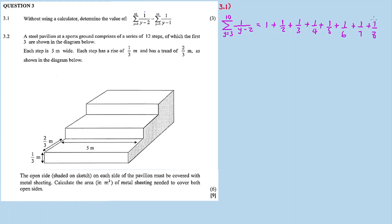We expand until the last term, which is 1 over 8. Now for the other sigma notation — 1 over (y minus 1). Substituting y equals 3: 3 minus 1 is 2, so it's 1 over 2. Then y equals 4: 4 minus 1 is 3, so plus 1 over 3. Then y equals 5: 5 minus 1 is 4, so plus 1 over 4.